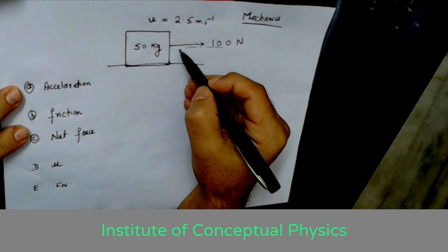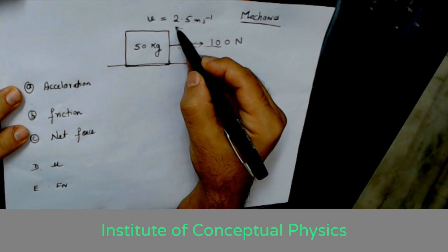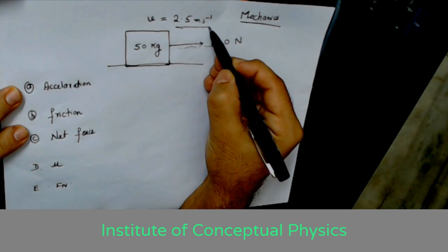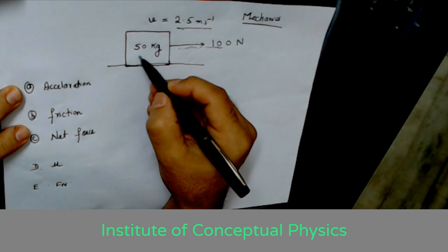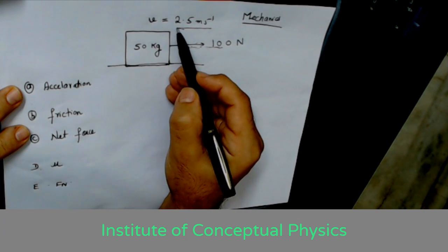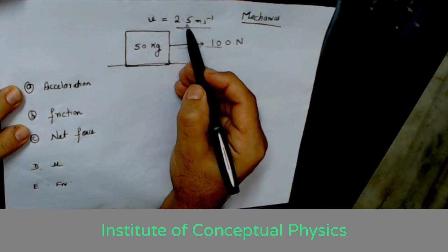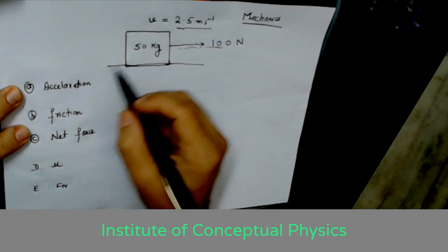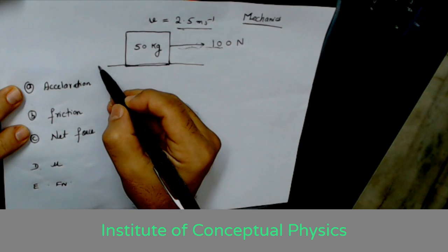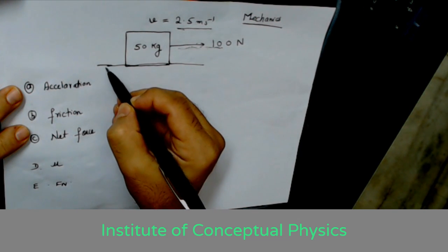When it is pulled by this force of 100 newtons, it generates a constant velocity of 2.5 meters per second. The mass of the block is given. Now since the velocity is constant, there is no acceleration. If you look into this figure, there is definitely a force of friction acting here.